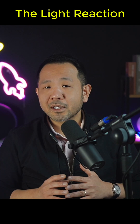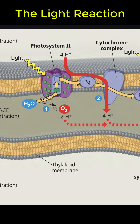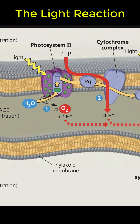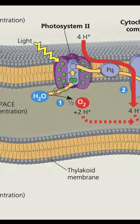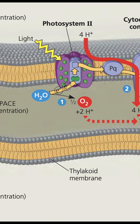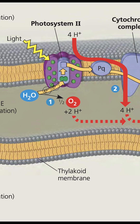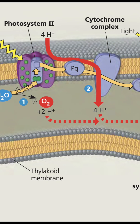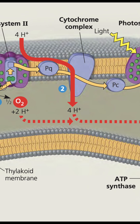There are two photosystems, but in photosystem 2, chlorophyll absorbs light to excite those electrons using that light energy. These excited electrons are then passed down a chain of proteins called the electron transfer chain proteins.